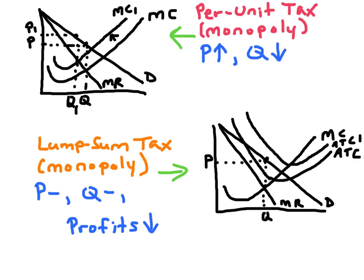Now average total cost and average variable cost are also going to shift up in this case. However, the graph would be way too messy to draw here. In the case of the lump sum tax for the monopolist, it's the ATC curve that shifts upward. So now the area of economic profit is going to become an economic loss in this example. So the profits will decrease.